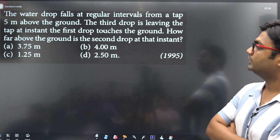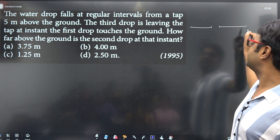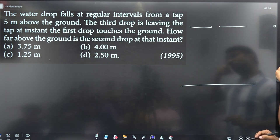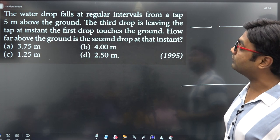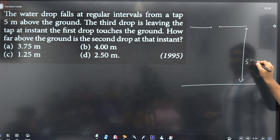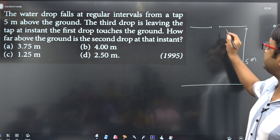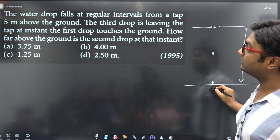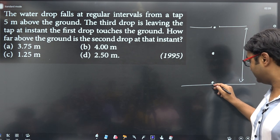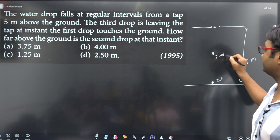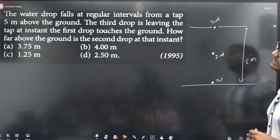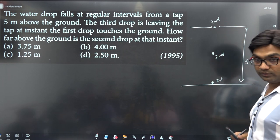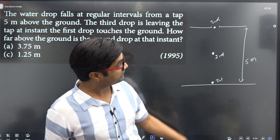So the problem setup is: water drops fall from a tap at regular intervals. The tap is five meters above the ground. The question asks about the second drop's position when the first drop reaches the ground.